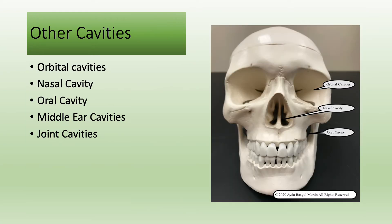We have other small cavities in the body, such as orbital cavities that house the eyeballs, nasal and oral cavities, middle ear cavities, and lastly the cavities in synovial joints.